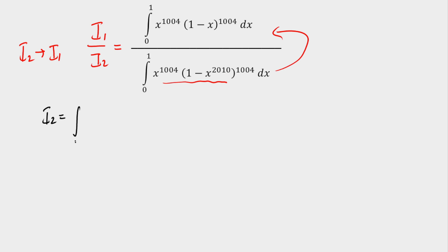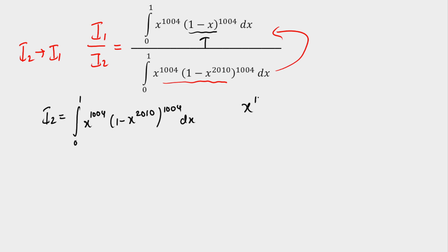i2 is the integration from 0 to 1 of x to the power 1004, multiplied by (1 minus x) to the power 2010, then 1004, dx. The first thing is I need to decrease the power, because in order to make i2 look like i1, the inside power of (1 minus x) needs to be reduced. I can see that if I treat the derivative as something outside, it will be easy to convert. So I take x to the power 1005 as y, because its derivative x to the power 1004 dx appears as a factor, giving us dx equal to dy divided by 1005.